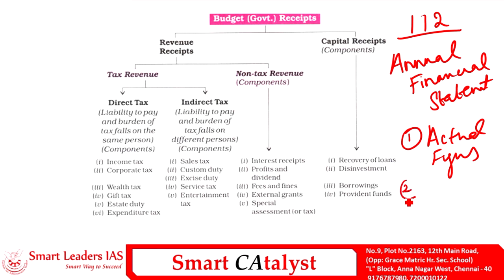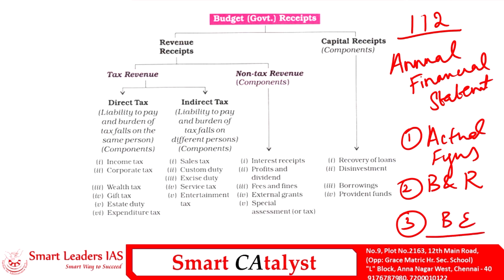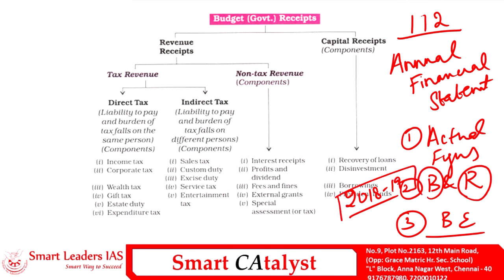The second component talks about the budget and the revised estimates of the current fiscal year, and the third component talks about the budget estimates of the coming year. For example, we are currently in fiscal year 2018-19, so this budget talks about the budget estimates as well as the revised estimates for the ongoing year 2018-2019, and also the budget estimates for the upcoming year 2019-2020, along with the actual figures for 2017-2018.